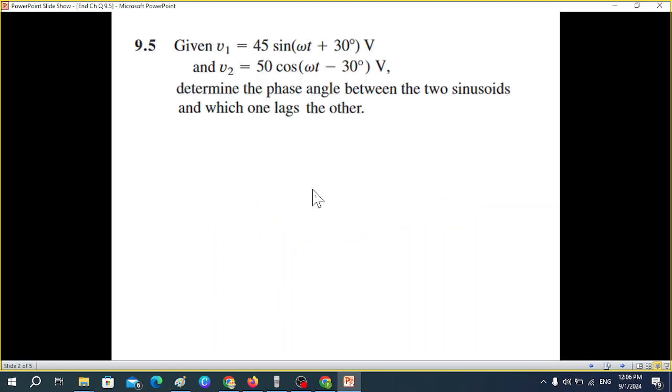Straight away to question 9.5. These two signals are given: v1 = 45 sin(ωt + 30°) V and v2 = 50 cos(ωt - 30°) V. We have to determine the phase angle between the two and which signal lags the other.